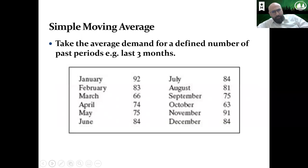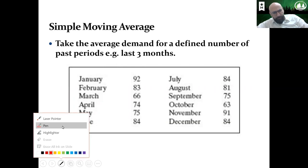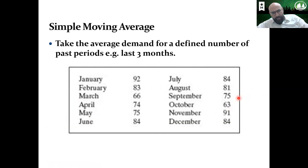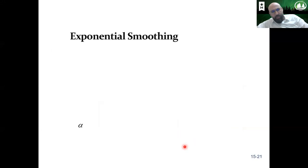For the simple moving average example: we use the last three months. Looking at the data for October, November, and December — we add them together and divide by three. That gives us the demand forecast for the month of January.